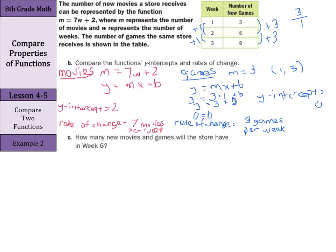So, to compare the functions' y-intercepts and rates of change, the movies has a larger y-intercept and a higher rate of change. How many new movies and games will the store have in week 6?